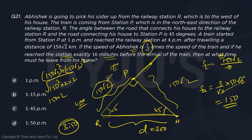So, the time taken for Abhishek is 300 divided by speed 150, which is 2 hours. He should leave the house 2 hours before 3:50, which means leaving at 1:50. That is option D.